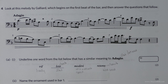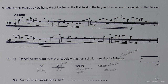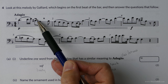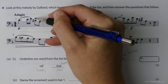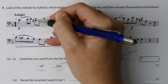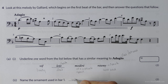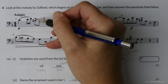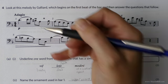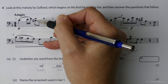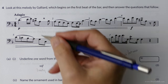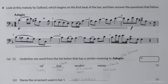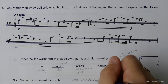Next we're asked to name the ornament used in bar one — this sign here. You could just say mordent, but when it's got a line through it we have to say lower mordent. Here you could say mordent or upper mordent to be absolutely clear. If you remember, it's like a rapid alteration — with the upper mordent you go up a note and then back down again. So the answer is upper mordent.